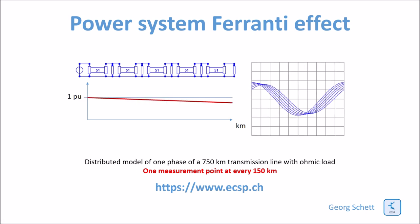If I increase the load — that means I reduce the resistance at the end of the line — you can see that the voltage along the line is reduced. At each segment the voltage is slightly lower, and you can also see a phase shift between the source voltage and the voltage at each segment. The maximum phase shift is achieved at the end of the line. This is typically what you get when the resistance at the end of the line is lower than the surge impedance of the line.